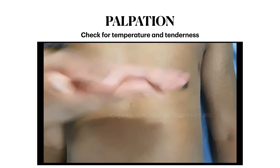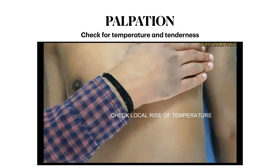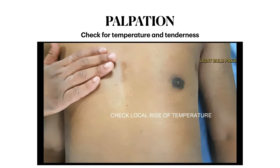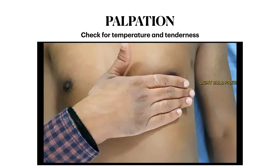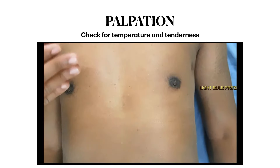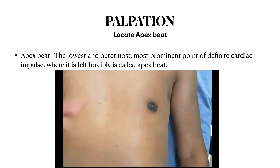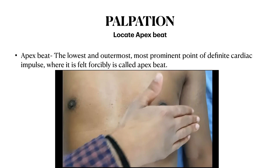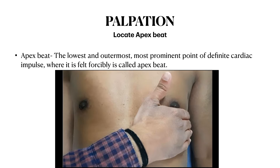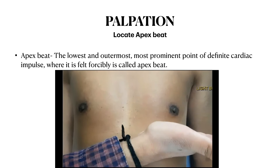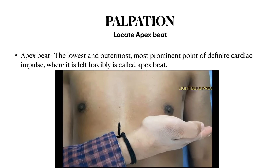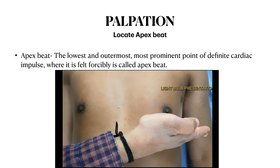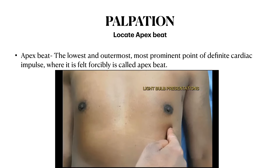This video shows how to check for temperature and tenderness in palpation. First, warm your hands and then palpate the various areas of the thorax, looking for rise in temperature or tenderness. To locate the apex beat, warm your hands and put your palm over the precordium area and feel the most prominent point at which the heart is beating. After that, put the ulnar border of your palm over the most prominent point and locate the apex beat with the tip of the index finger.